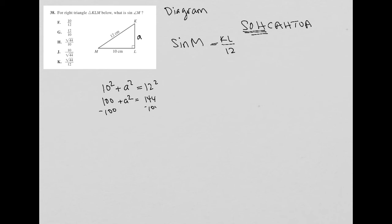Subtract 100 from both sides. A squared equals 44. Square root both sides. And A is equal to the square root of 44.